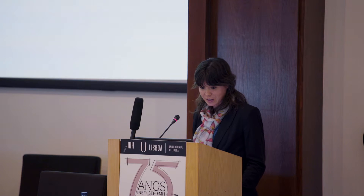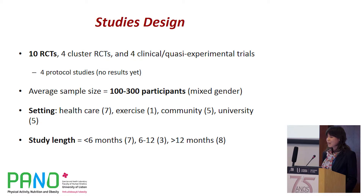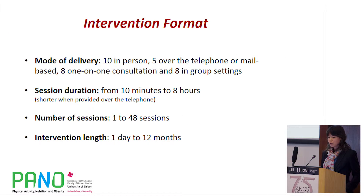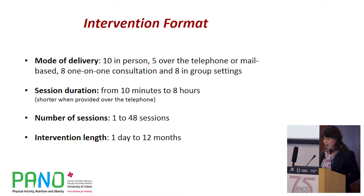Regarding studies' characteristics, we were able to find only 10 randomized controlled trials; the other studies had different study designs. The average samples ranged between 100 and 300 participants, and there were variable settings and variable study lengths. Concerning the intervention format, we noted high variability in the mode of delivery, in the number and duration of sessions, and in intervention length. Some interventions lasted one day while others lasted 12 months — a big difference.